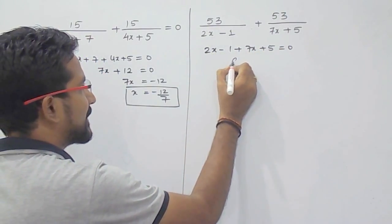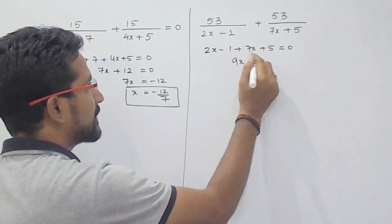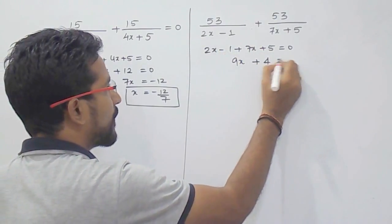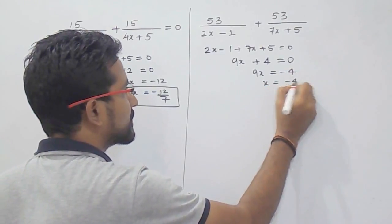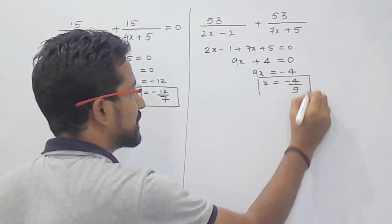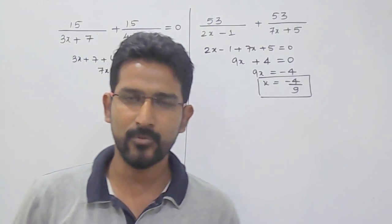Now 2x plus 7x, that is 9x, minus 1 plus 5, that is plus 4, equals 0. So 9x equals minus 4, so x is minus 4 by 9. So your answer is minus 4 by 9.